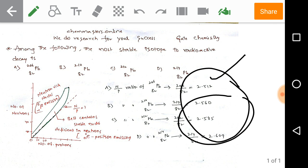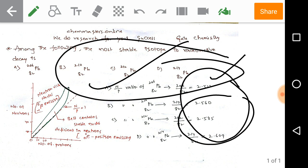Therefore, option A, plumbum 82-206, is the most stable isotope compared to all the others. The answer is A. Thank you.